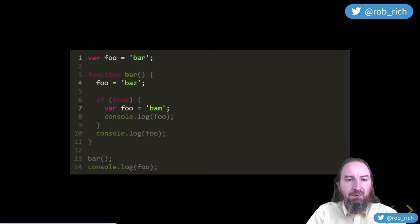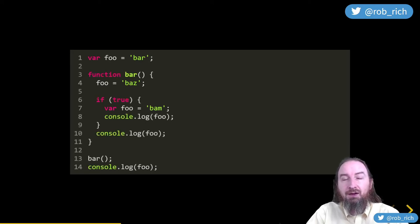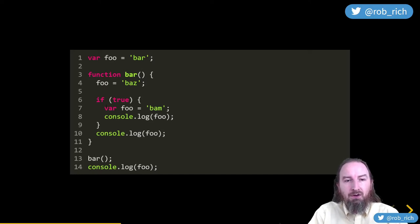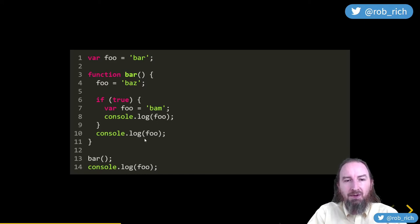Let's change this up: instead of declaring the variable inside the if block, let's declare it inside the function. First phase: define both variables. Second phase: set outer foo to bar, call the function, set inner foo to baz, set it to bam, console.log bam, console.log bam again. As we leave the function, we console.log bar. Result: bam, bam, bar.